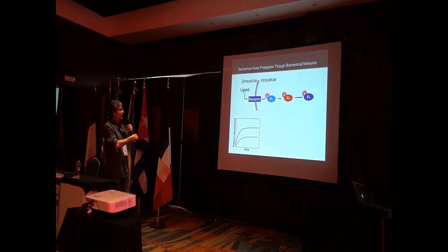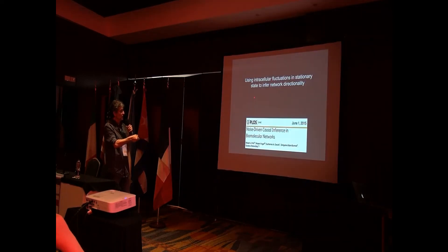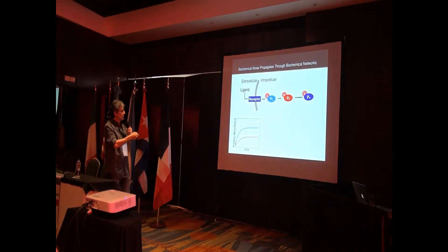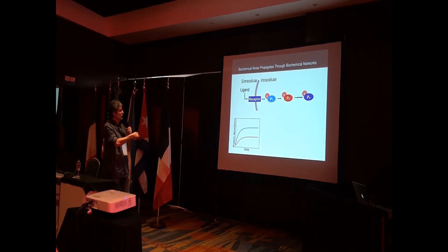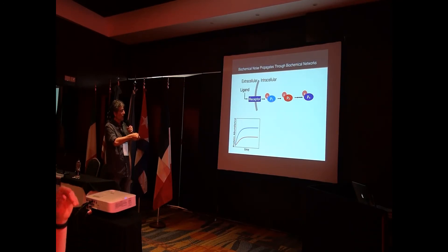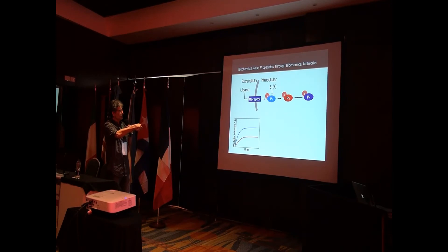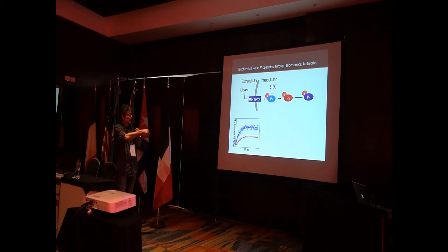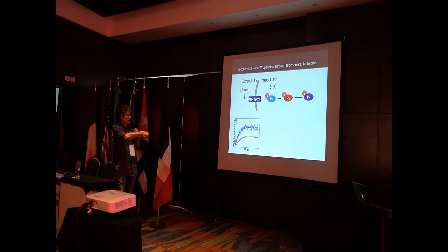The idea is the following: suppose you have some ligand, and depending on the amount of the ligand, you might have more information transmitted through a phosphorylation cascade. If there is noise affecting this protein — the kinase for another protein — the noise in one will affect what happens in two, so the blue fluctuations will be responsible in part for some of the fluctuations we see in two.